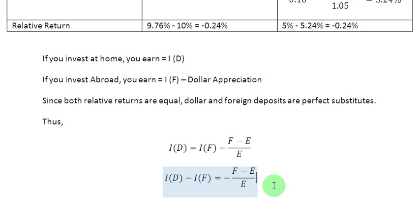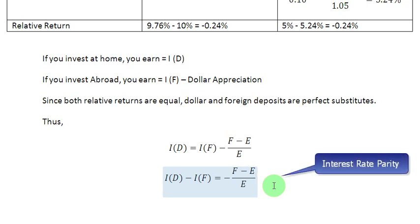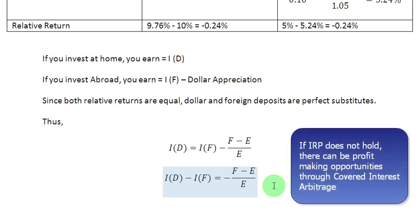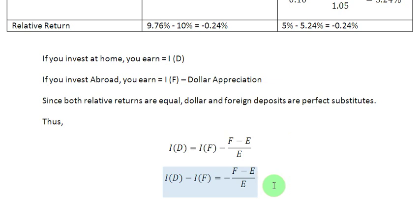You will realize, as mentioned in the first episode as well, that the data used has been tailor-made to demonstrate the parity condition. In real life, the data need not confirm interest rate parity, and in that case some profit can be made through a process known as covered interest arbitrage, which is not within the scope of this brief video. So, thanks very much for watching.